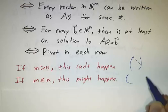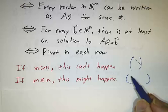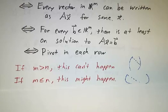If you have a short and fat matrix, you might have a pivot in each column or you might not. You have to do more work to tell.